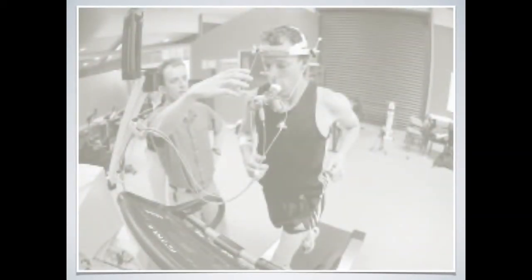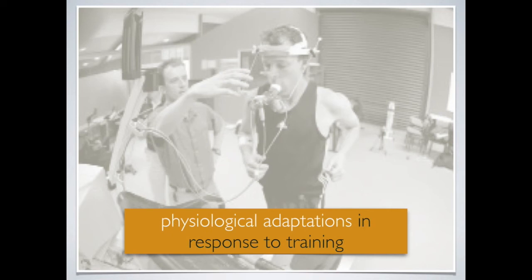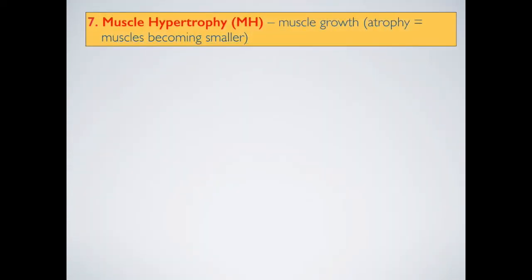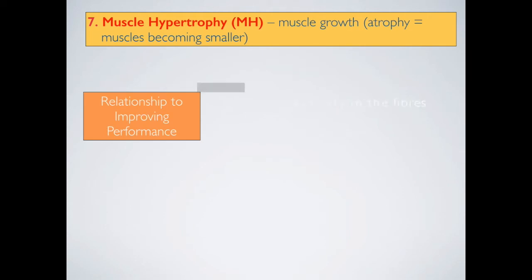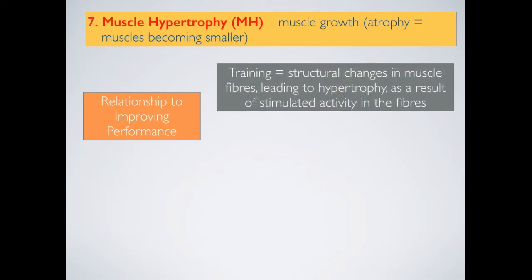This presentation will continue with the physiological adaptations in response to training. Muscle hypertrophy refers to muscle growth, which is the opposite of atrophy, which means muscles becoming smaller. When we train and apply progressive overload, and we train specific muscle groups — applying specificity as well — this will lead to structural changes in muscle fibres, which will lead to hypertrophy, or muscles getting larger, as a result of stimulated activities.